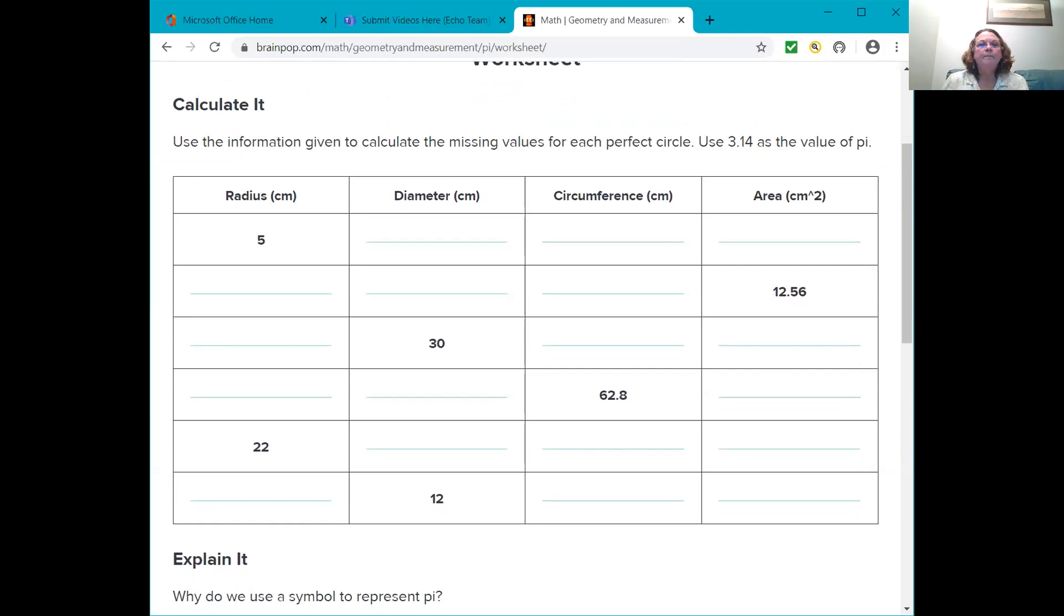So remember, each of these is part of an equation for a perfect circle. Use Pi and the calculations. Hopefully you wrote some of those things down in your notes. And then come back and compute these other, the diameter, the circumference, and the area. You know the radius. Okay. I will let you look at that for a minute. And hopefully you paused. You have it paused so that you can finish.